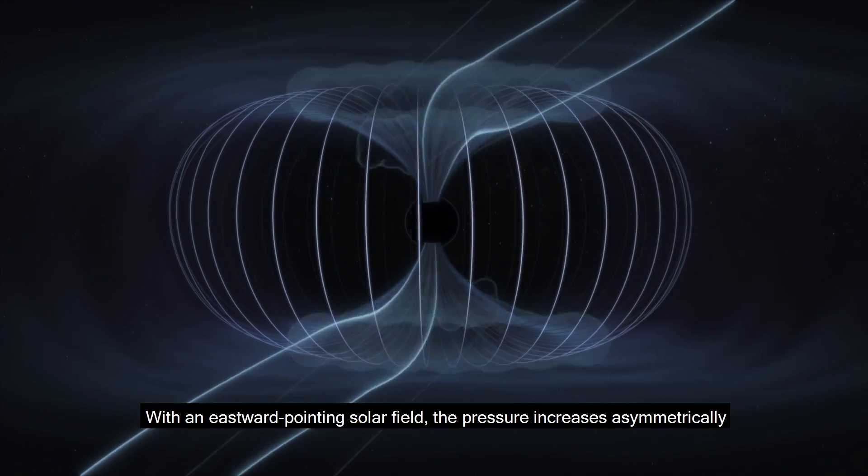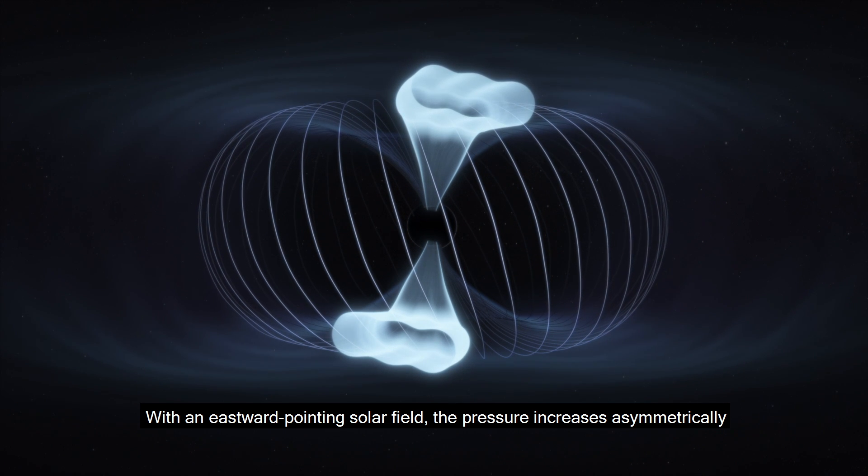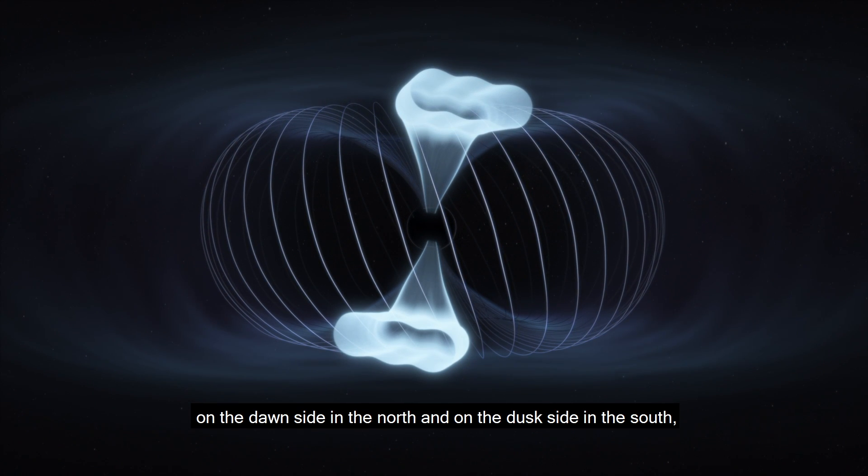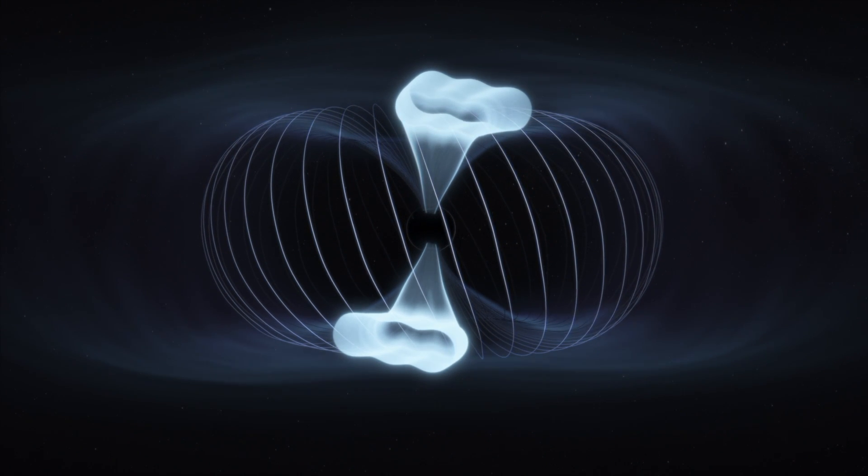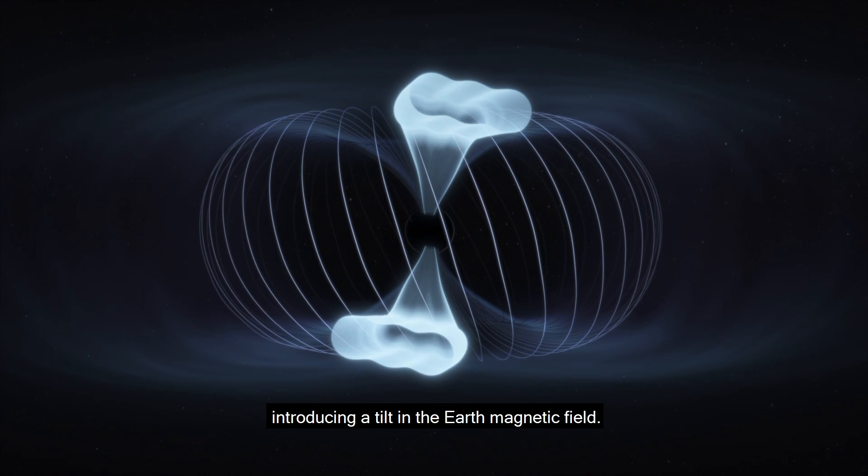With an eastward-pointing solar field, the pressure increases asymmetrically, on the dawn side in the north and on the dusk side in the south, introducing a tilt in the Earth's magnetic field.